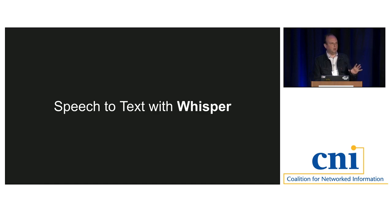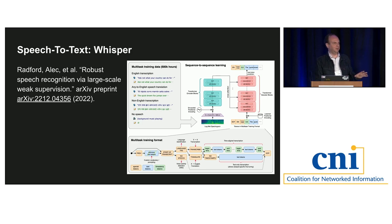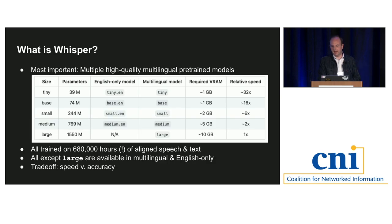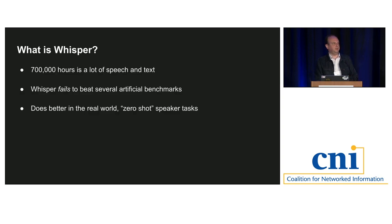Whisper is probably the tool most people in this room have heard of. It's freely downloadable from OpenAI — remarkable that they've open-sourced the weights. There are many different weight versions you can download for this speech-to-text model: versions for Android phones, versions for expensive NVIDIA GPUs, with options based on performance, multilingual support, accuracy, or speed. It was probably trained on about 680 to 700,000 hours of text, likely YouTube captions. It doesn't always do well on artificial benchmarks, but it seems to do really well in the real world.